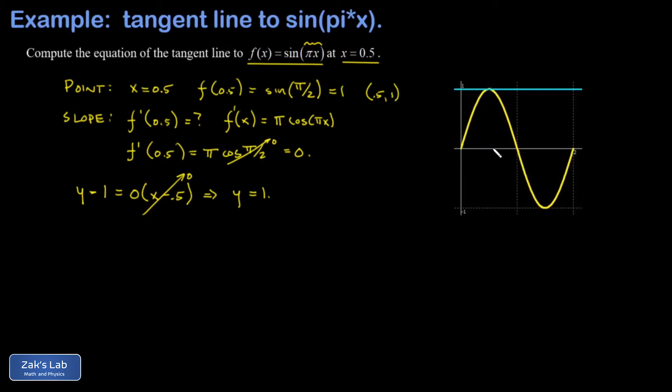And when I look at x equals 0.5, this is actually the location of a local maximum of this sine function. And I see that the tangent line touches exactly at the top of that hill and has a slope of 0.